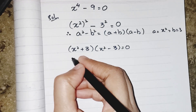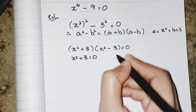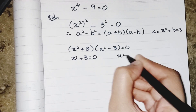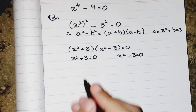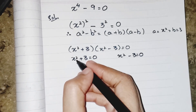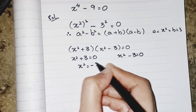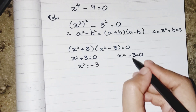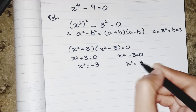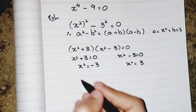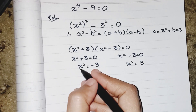So I have to equate both factors to 0: x² + 3 equals 0, and x² - 3 equals 0. Now when plus 3 moves to the other side it will be x² equals minus 3, and the minus 3 side will give x² equals plus 3.